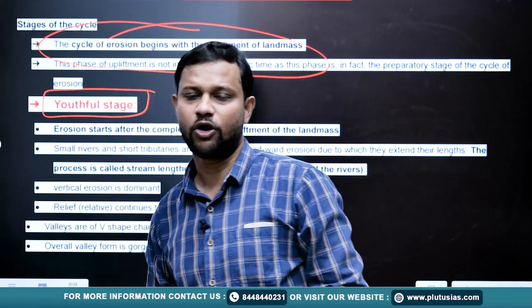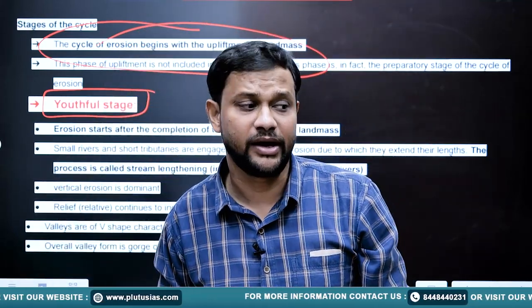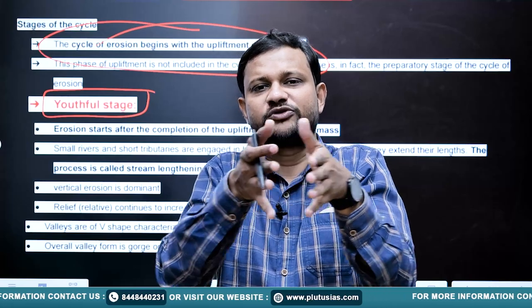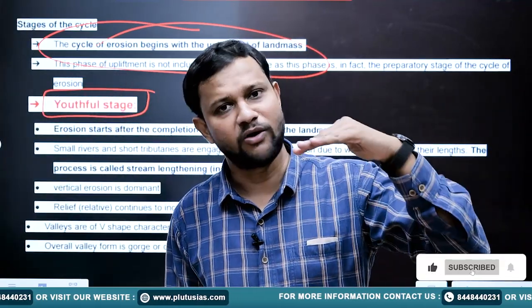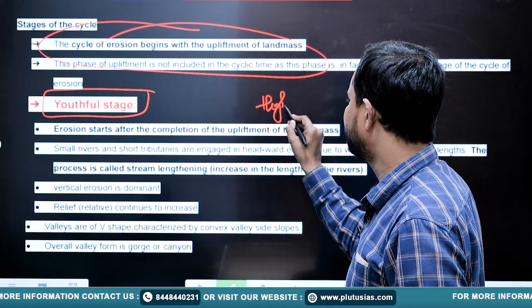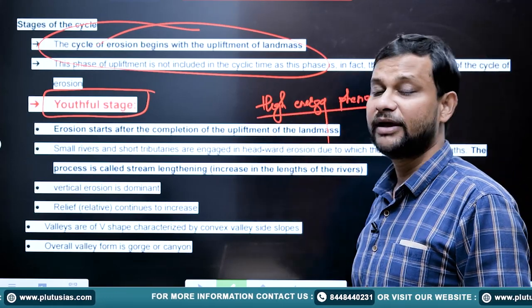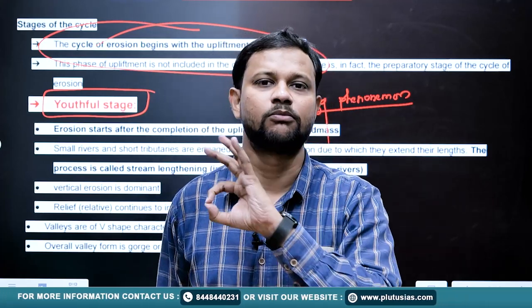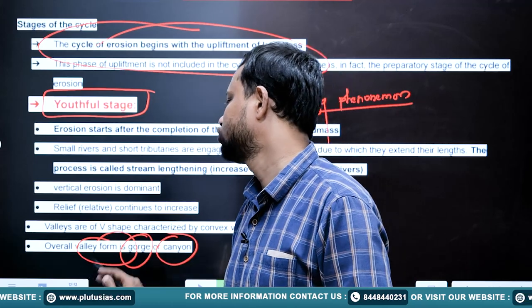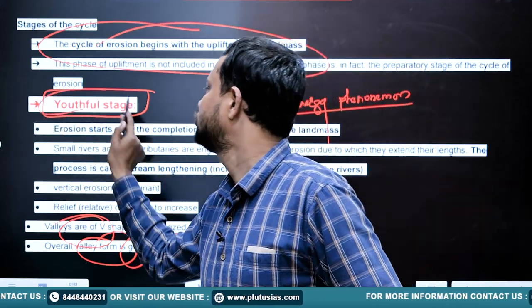In the youthful stage, as elevation is established, the erosion process takes control. Initially streams are few and of short length, but stream lengthening occurs continuously as erosion progresses. High energy phenomena are observed because of the elevation achieved, making erosional processes and downcutting dominant. The landforms typically evolved during this stage include V-shaped valleys, gorges, canyons, waterfalls, and plunge pools.